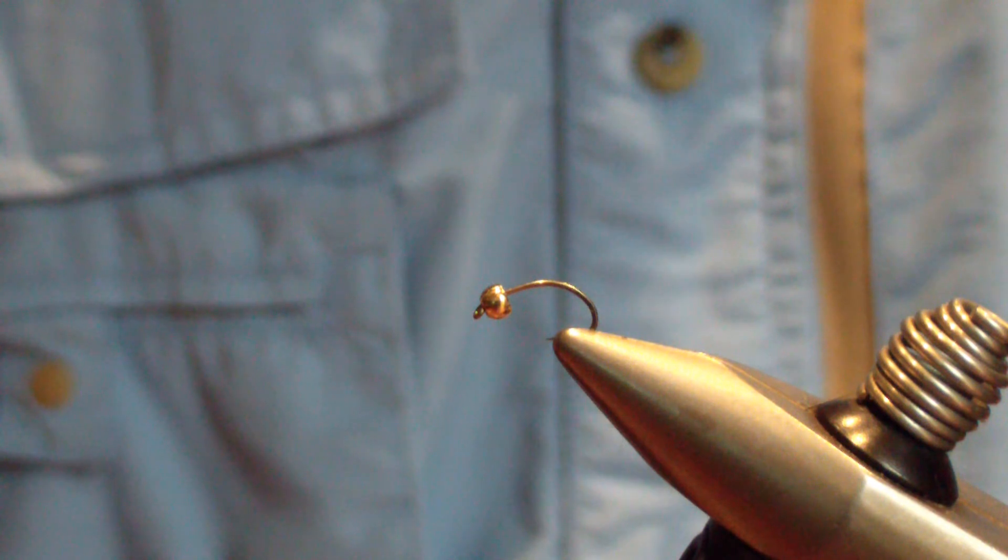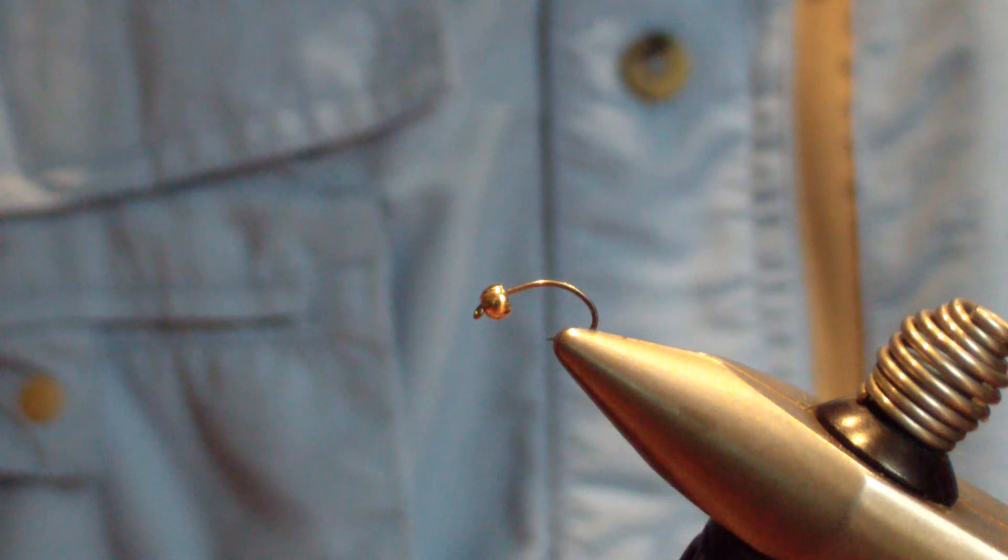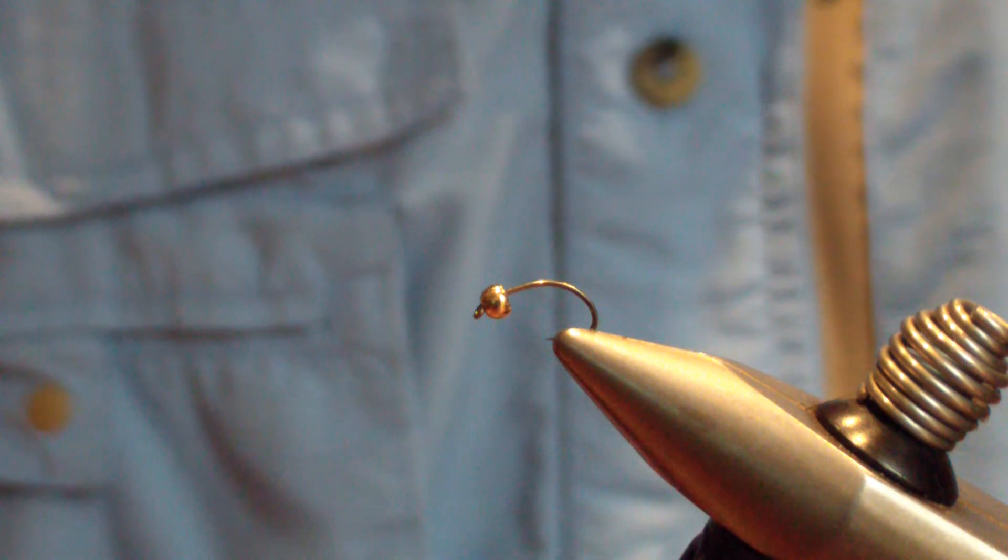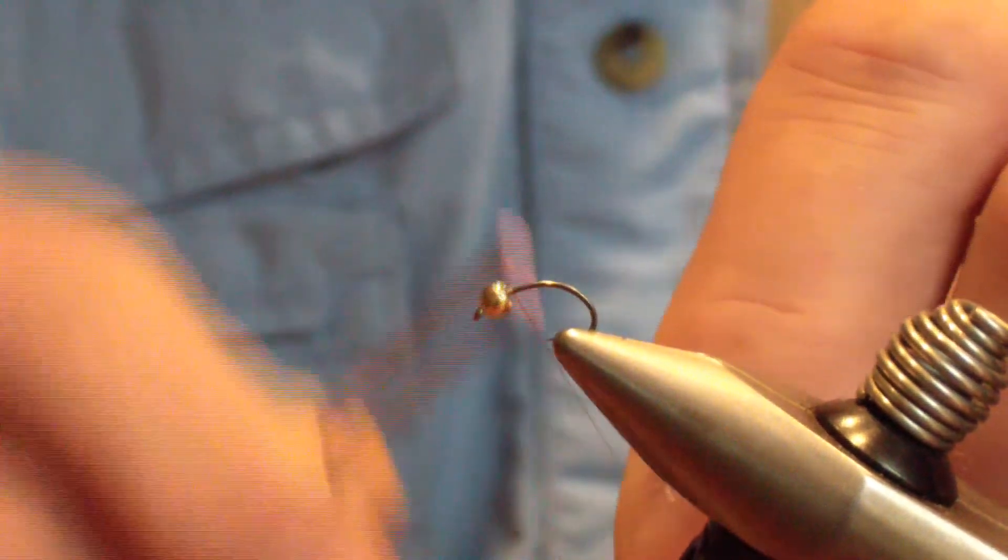I start off with a size 16 caddis emerger or scud hook, depending on how much weight you want. Either one works for me. Add a gold tungsten bead, and we're going to start with Olive Dun 8/0 Uni-thread.